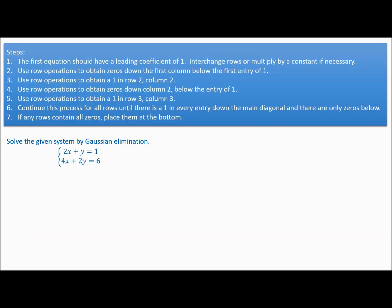Let's do a full problem — solve the given system by Gaussian elimination. The very first step is writing it as an augmented matrix. The first equation is 2x plus 1y equals 1, so the first row is 2, 1, then a vertical line, then 1. The second equation is 4x plus 2y equals 6, so the second row is 4, 2, then 6. There is our augmented matrix.